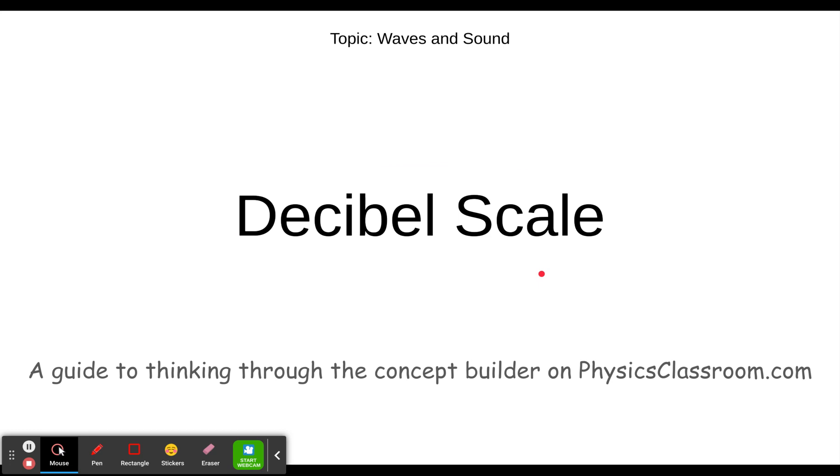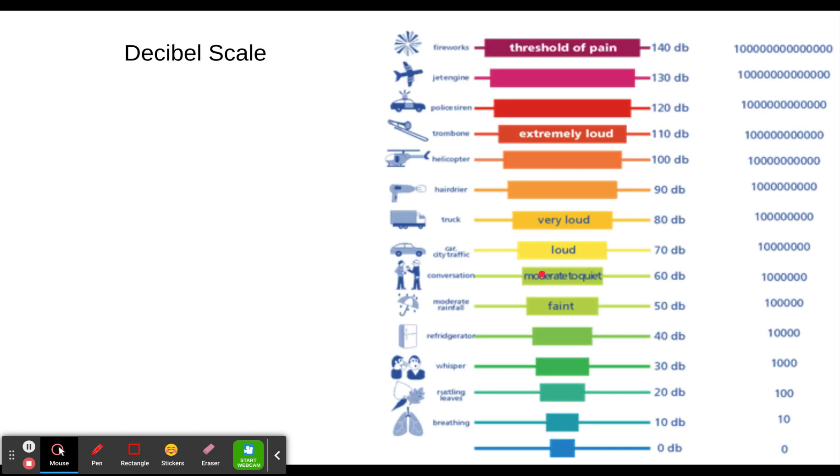Decibels refer to how loud something is, so you see the scale here. We're going to talk about the decibel numbers here as well as the intensity numbers, and you can see some ideas to get an idea of how loud it is.